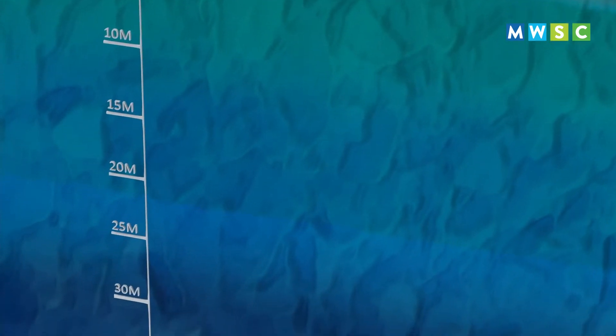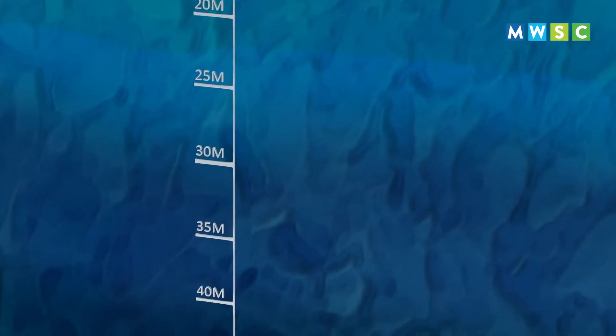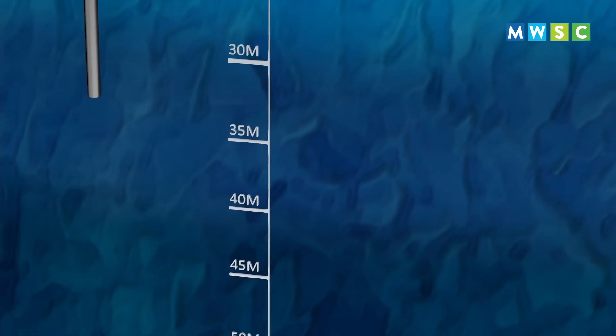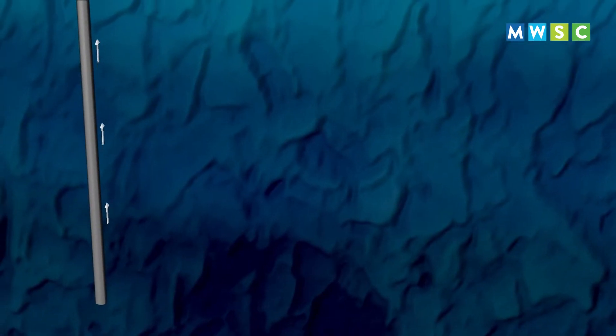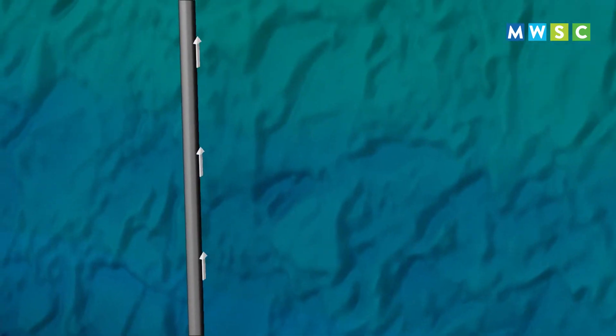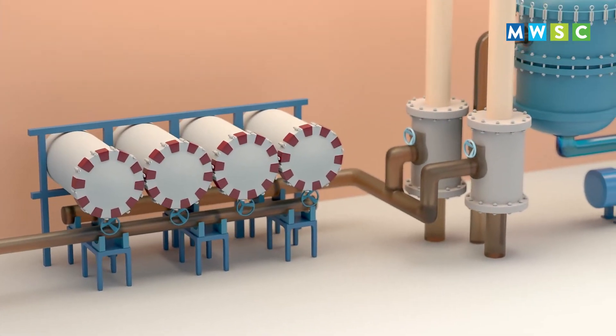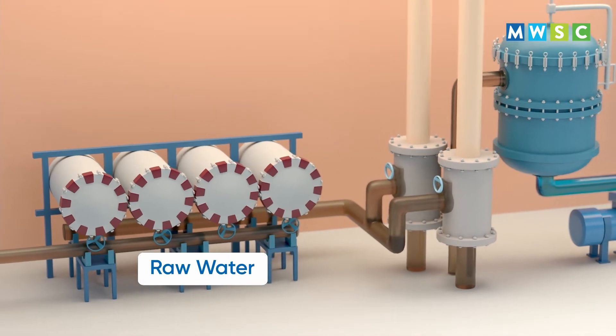The first step of the desalination process involves extraction of raw water from 30 to 50 meters underground through a drilled borehole. The extracted raw water contains a high amount of salt concentration along with other impurities, making it unsuitable for drinking.